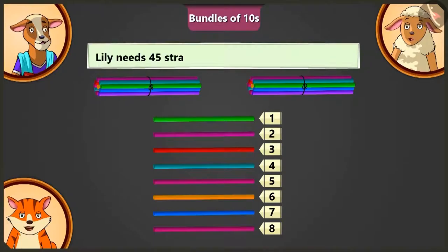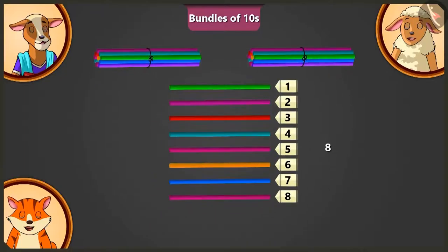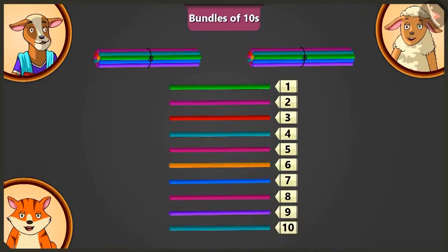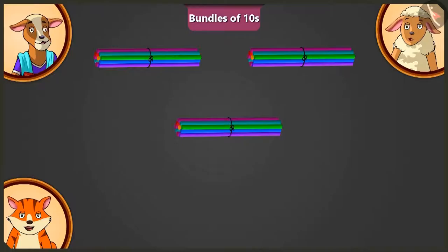Corrie ma'am, but I need forty-five straws. How will we count forty-five straws? Look, Lily, there are two bundles of ten and eight straws here. How many straws will we have to add to eight straws to make a third bundle of ten? Eight and one — nine, and one — ten. If we add two straws to eight straws, there will be ten straws. Like this, we can make a third bundle of ten.